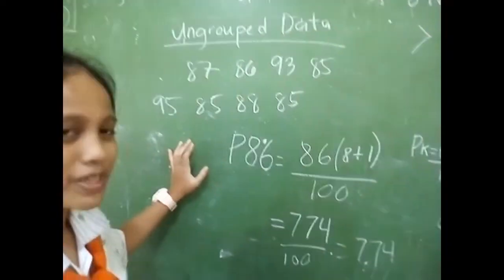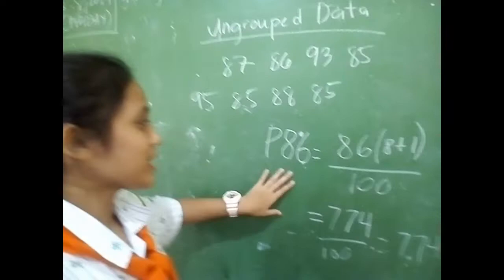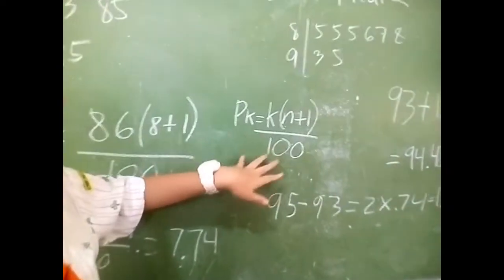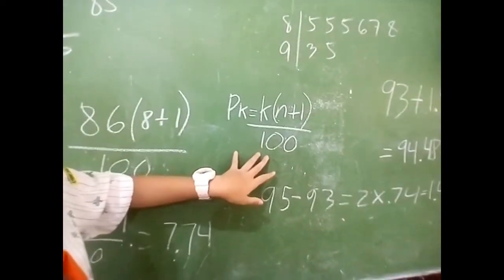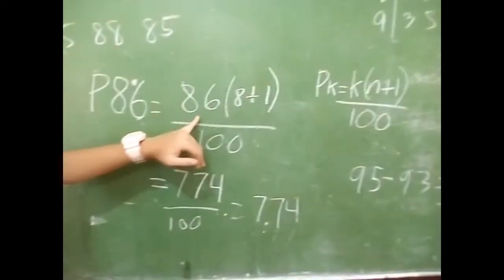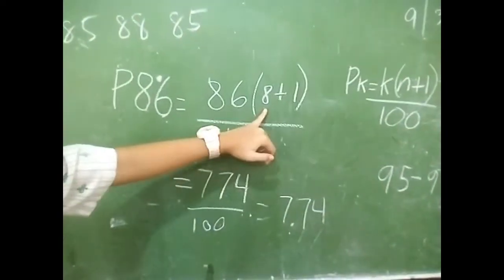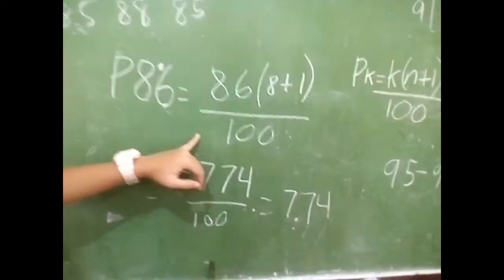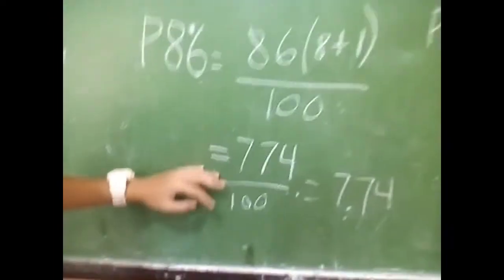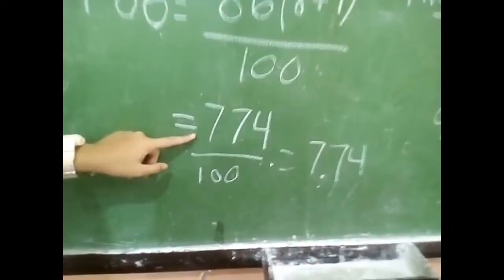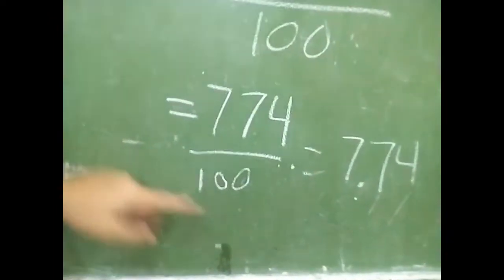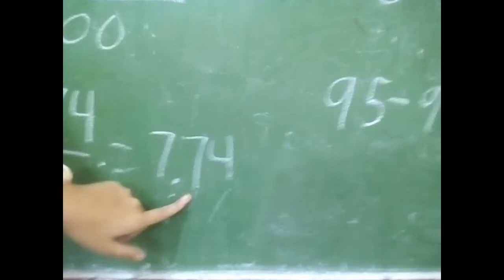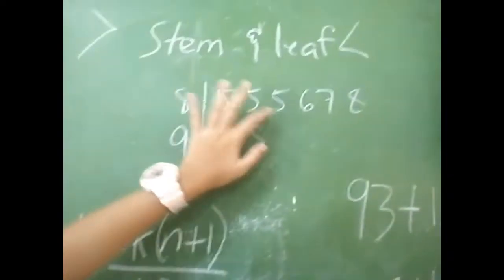For the percentile, the formula will be K times (N+1) divided by 100. So it will be 86 times 48 — the frequency — plus 1 divided by 100, which equals 774 divided by 100, which equals 7.74. So we count to position 7.